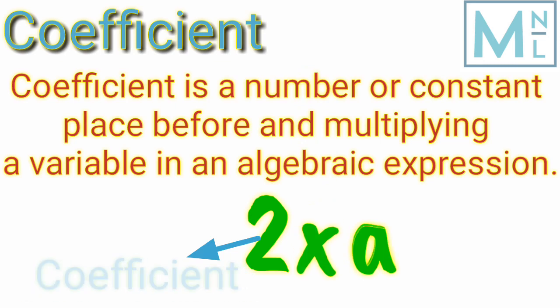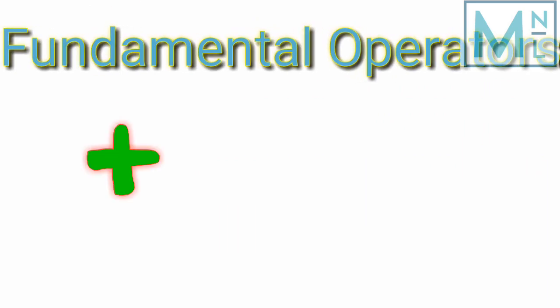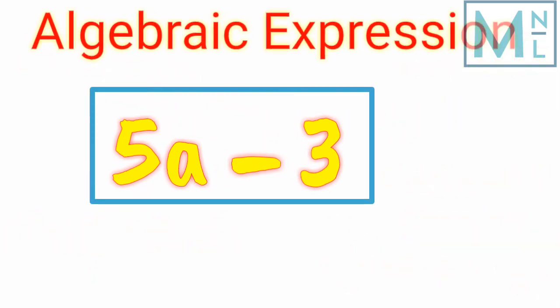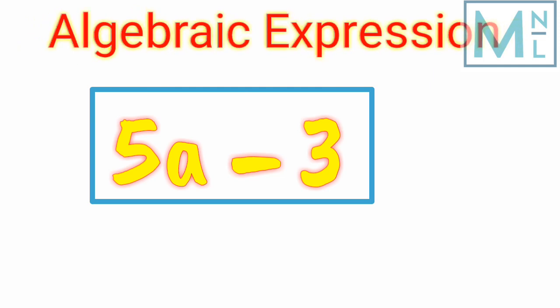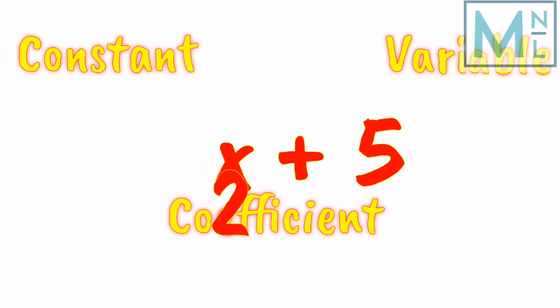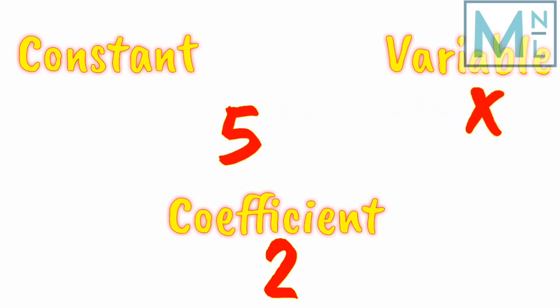For example, in 2a, the 2 is a constant but it is multiplying a, so this constant is called a coefficient. Fundamental operators are plus, minus, multiply, and divide. When constant, variable, and coefficient are combined with the help of fundamental operators, an algebraic expression is formed. For example, 2x plus 5 — here 2 is the coefficient, x is the variable, and 5 is the constant.